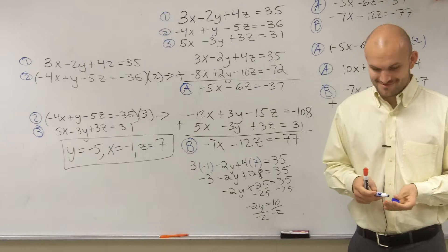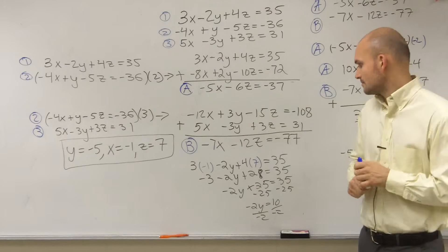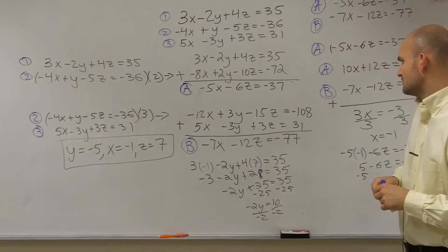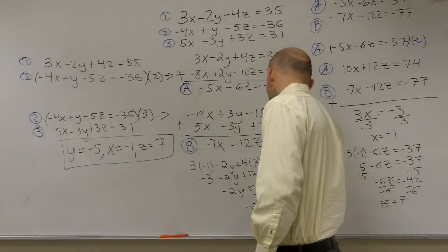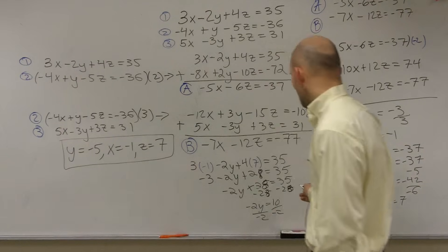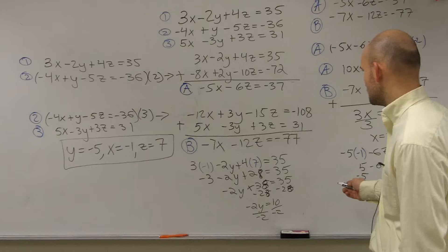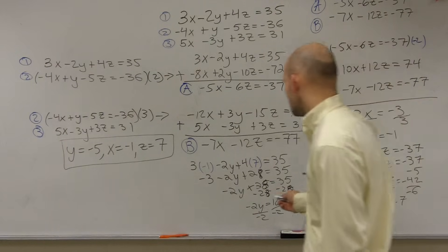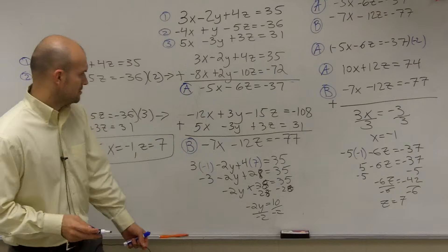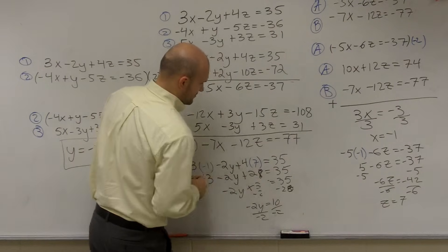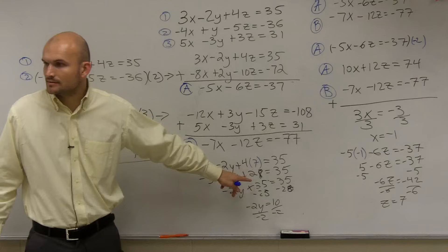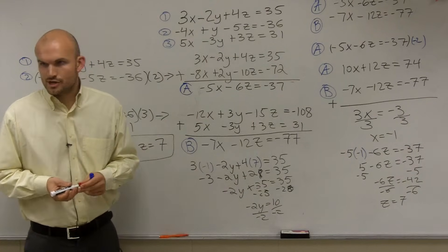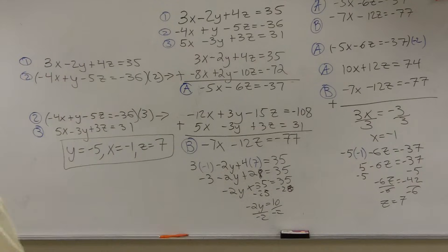So there you go, ladies and gentlemen — that is how you solve a system with three variables. The solution is y equals negative 5, x equals negative 1, and z equals 7. A student asked about the 28: I combined the like terms negative 3 plus 28 to get 25, then subtracted 25 from both sides. That's where the 25 came from.